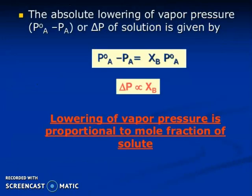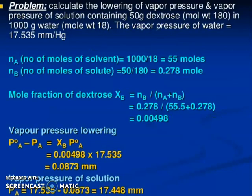Absolute lowering of Vapor Pressure, P°A minus PA or ΔPA of the solution is given by P°A minus PA equals XB P°A. So ΔP is directly proportional to mole fraction of B. Lowering of Vapor Pressure is proportional to mole fraction of solute. Mole fraction is important here. I just remind you, this is the relation between Pressure, Vapor Pressure and mole fractions.